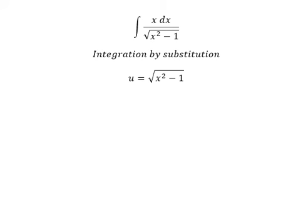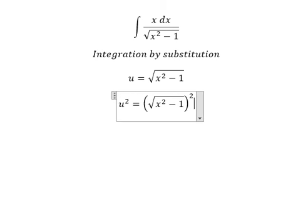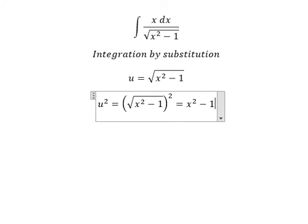Later that, we put the square for both sides so that we can cancel the square root and you get u square equals x square minus 1.